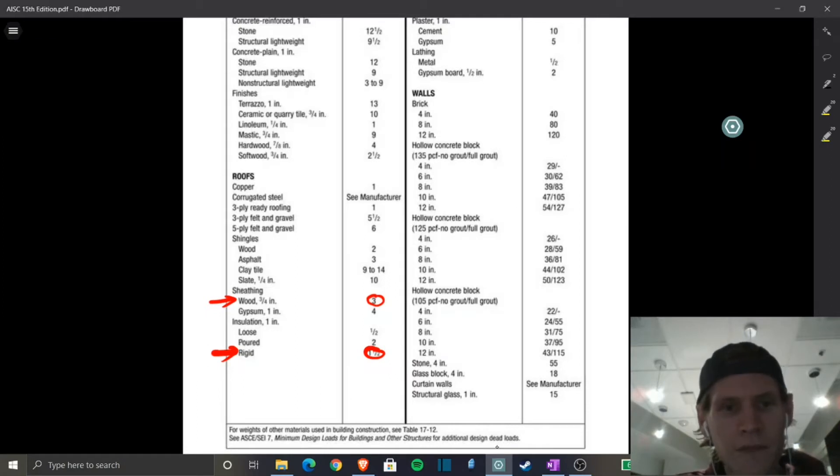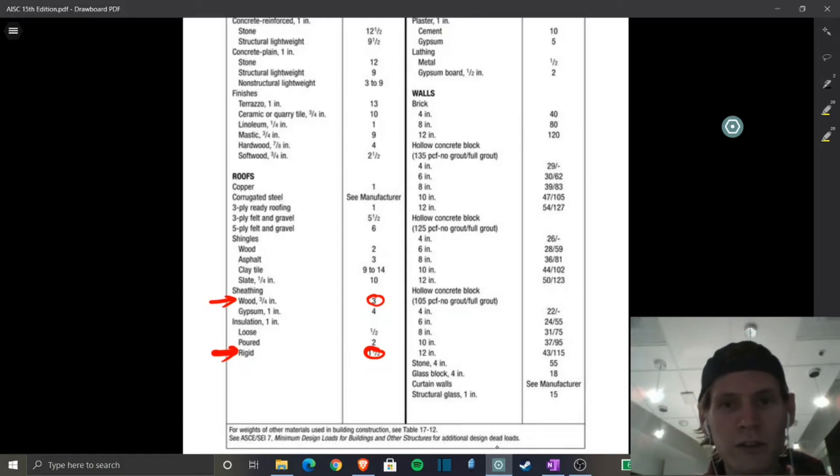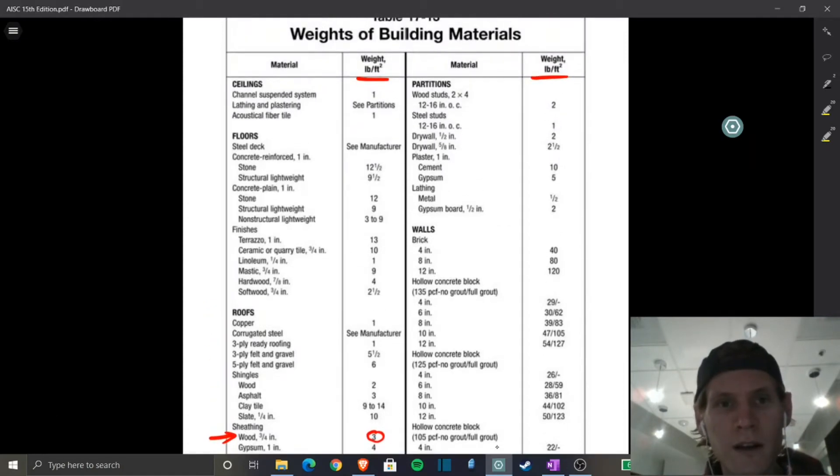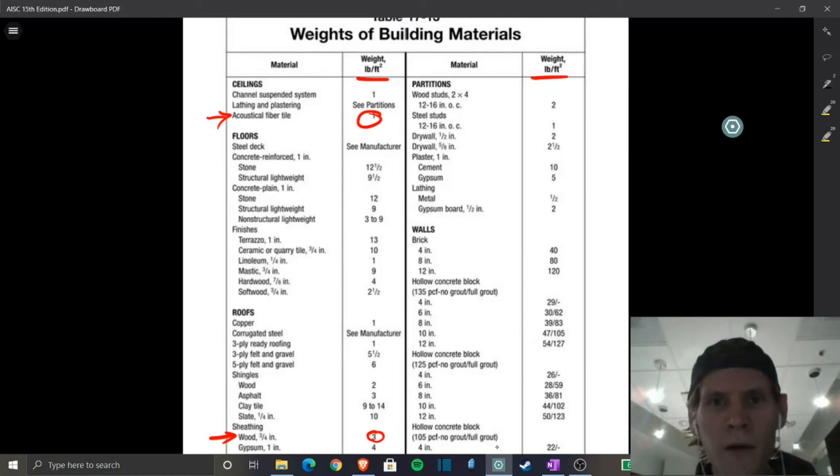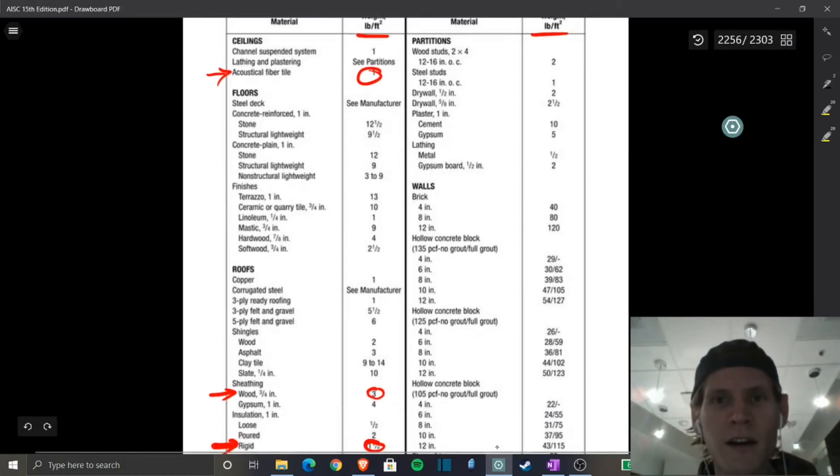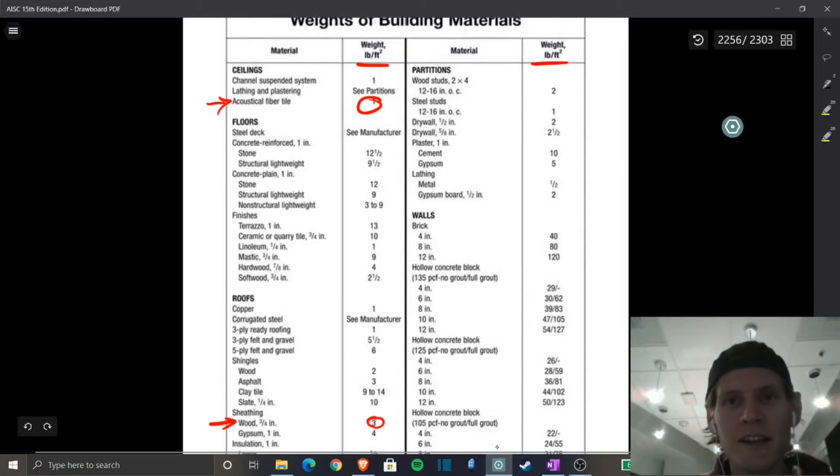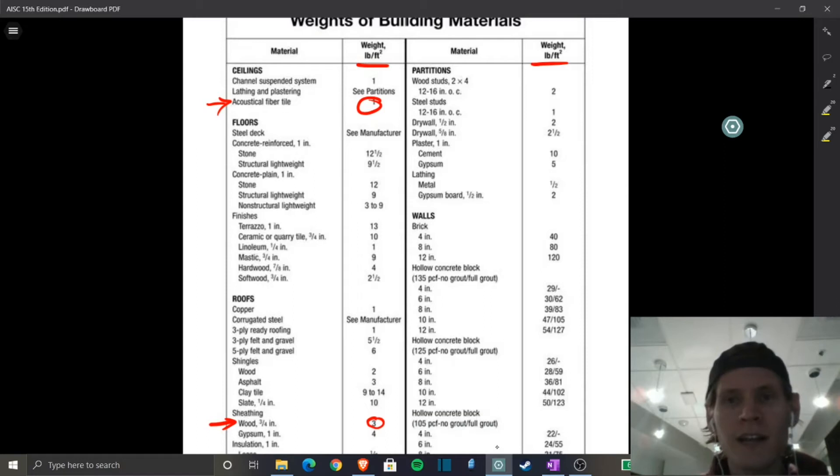And two bys. Let's see, oh, we do have the acoustical ceiling. So let's move up here. Ceiling acoustical fiber tile. Add another pound per square foot for that. Wood studs, they're saying are two by fours at 12 to 16 inches on center is two PSF. Well, let's kind of run with that criteria for our roof framing.